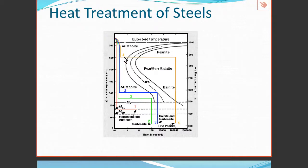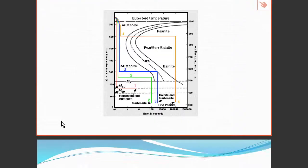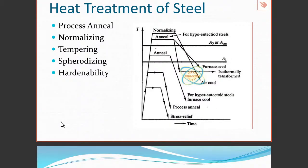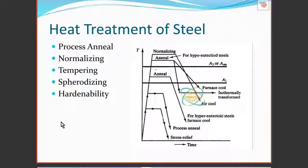Cooling curve four: we hold it at this temperature and convert it essentially into pearlite, then cool down. We're going to get almost all fine pearlite. So these curves are very useful for designing heat treatments, and we're going to look at six simple heat treatment processes that are common for steels.